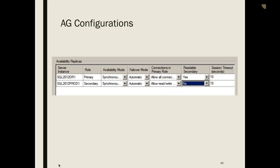For configuration options per replica you have synchronous and asynchronous modes (like database mirroring's High Safety and High Performance). In synchronous mode you can then enable automatic failover. You can also configure how readable secondary connections are handled: yes, no, or read-intent only — routing read connections explicitly to readable secondaries.